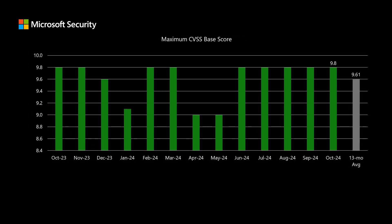Next, I'll talk about scoring, where Microsoft uses the Common Vulnerability Scoring System, or CVSS. This is a scale between 0 and 10, where 10 presents the most risk. The score is a starting point when we talk about risk — it allows software and hardware vendors to put all their vulnerabilities on a singular scale to compare them across different products, different services, and even across vendors.